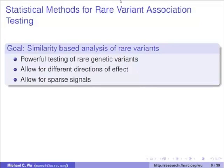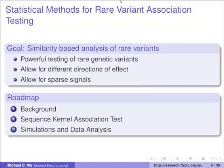The overall objective of this first part is to talk about our work developing a similarity-based test for rare variants, which allows for powerful testing of rare genetic variants. We allow these variants to have different directionality — some can be protective, some harmful — and we allow for sparse signals, meaning not all rare genetic variants need to have an effect on your particular phenotype.